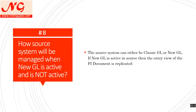How is the source system managed when New GL is active or not active? You may have two ECC systems — one with New GL active and one without. If New GL is active in the source system, the entry view of the FI document is replicated. If it is not active, replication happens in a different way, but this is not a limitation — it does not mean you cannot move to CFin. The mechanism works differently. In summary, the source system can be either classic GL or New GL.